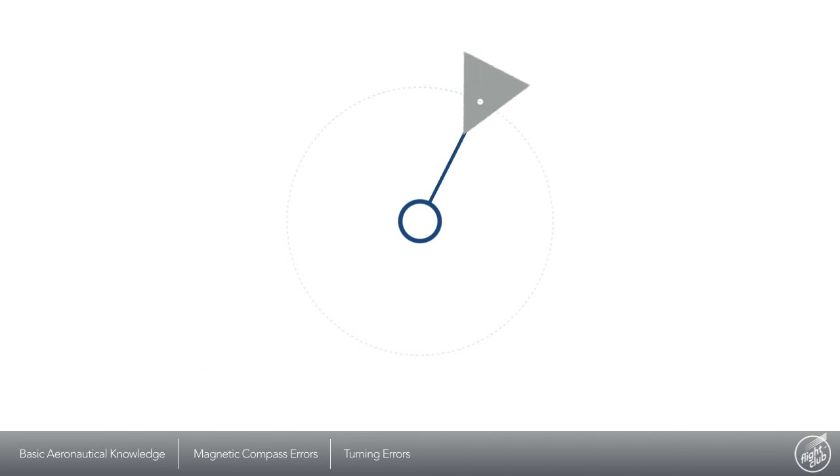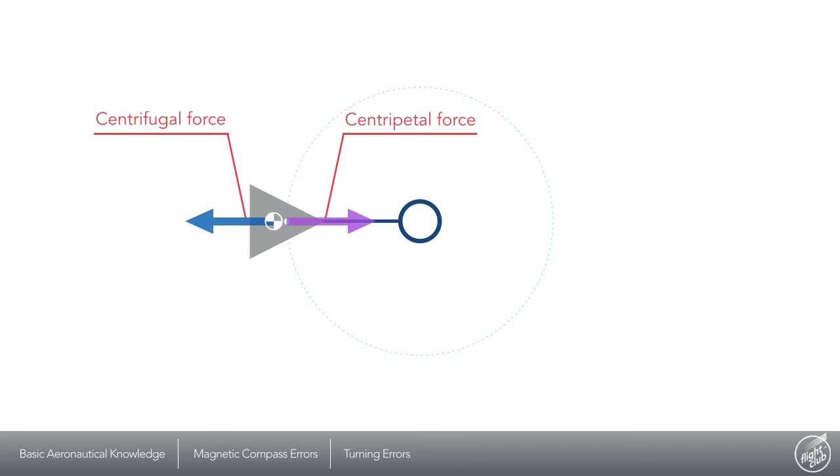This triangular object turning around in a circle is like an aeroplane in a balanced turn. It has centripetal force accelerating it towards the center point and in the opposite direction it has the centrifugal force acting outwards.